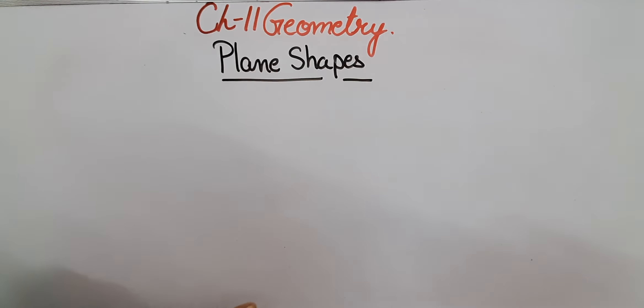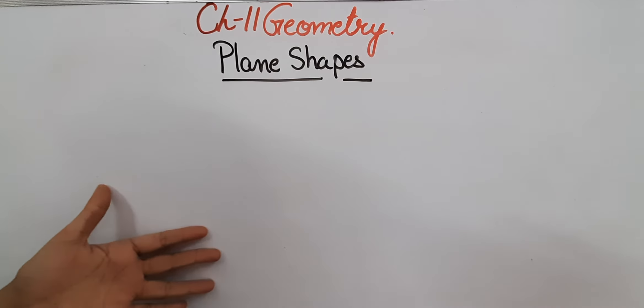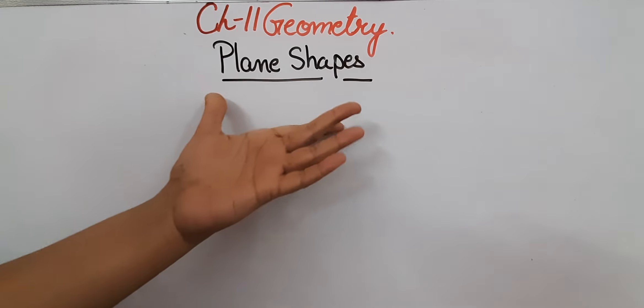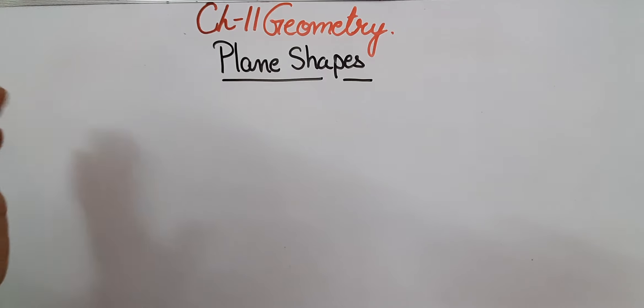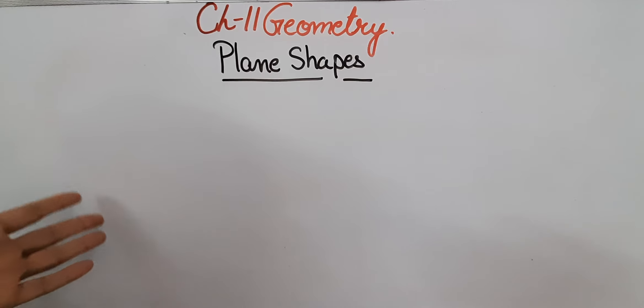Hello everyone, we will continue our Chapter 11 Geometry. In this video we are going to learn about plane shapes. A shape that can be drawn on a plane or a flat surface or a sheet of paper is called a plane shape. Some of the plane shapes are rectangle, square, triangle, and circle.